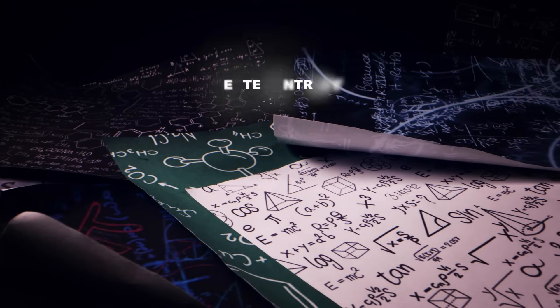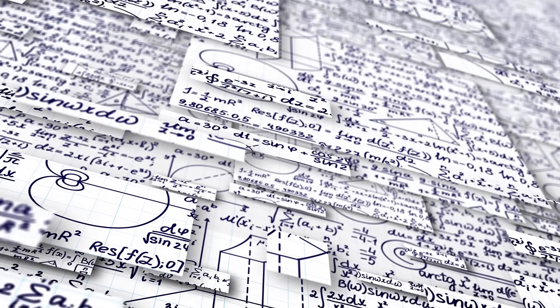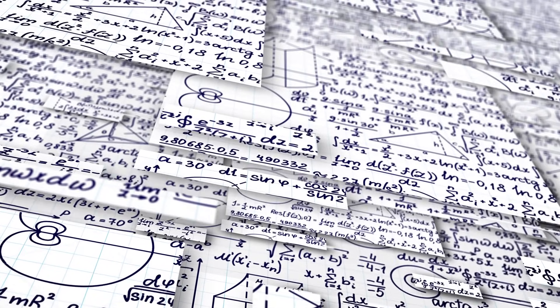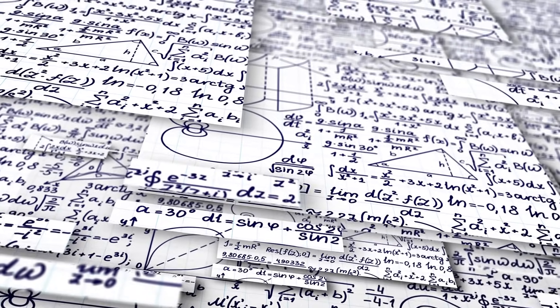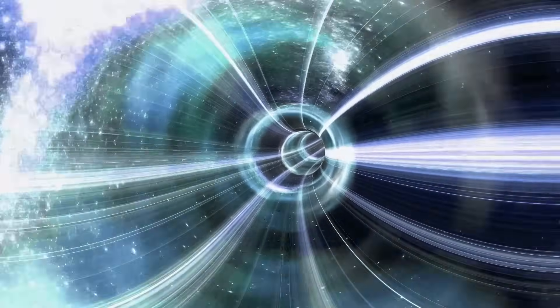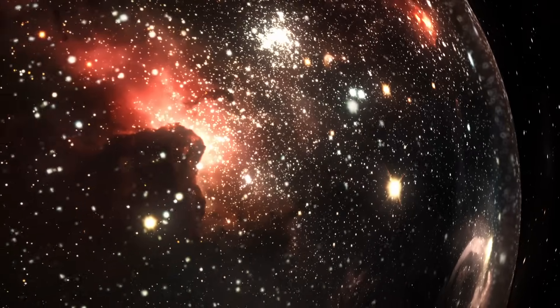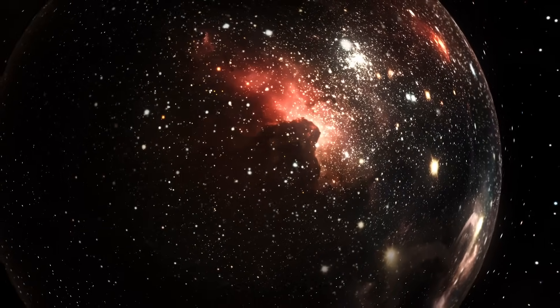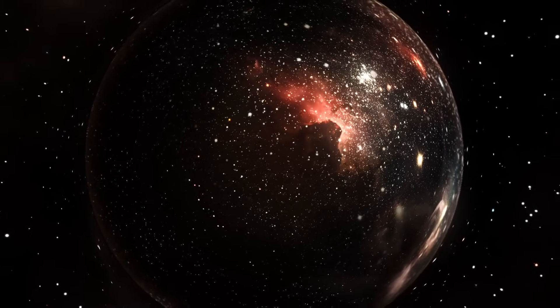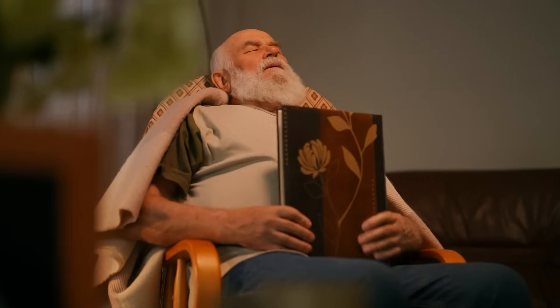Enter entropy, which is basically a measure of disordered states, and according to the second law of thermodynamics, it always increases over time. This is why your room doesn't spontaneously clean itself, much to the disappointment of teenagers everywhere, and why you can't unscramble an egg. This relentless march towards disorder gives time its apparent direction. It's like the universe is playing a cosmic game of Jenga, and we're all just watching the tower get wobblier and wobblier. But here's a wild thought, what if somewhere out there in the multiverse, there's a universe where entropy decreases and time runs backwards. Imagine a world where you start your life as an old person and gradually get younger. You'd remember the future and have no idea about the past. Talk about a mind-bender.